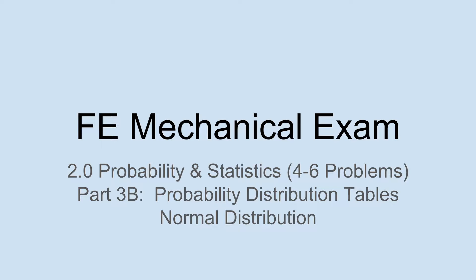So this is part 3b, probability distribution tables, normal distribution. The previous part was focused on the binomial distribution and the next one will be the t distribution.